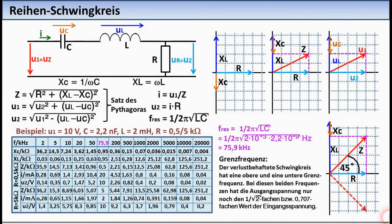From the fourth phasor diagram, that is from this one here, you can see that the cutoff frequencies, one above and one below the resonant frequency, are present when the reactive component of Z, namely XL minus Xc in magnitude, equals R. R is then 70% of Z in magnitude, and accordingly U2 is 70% of U1.